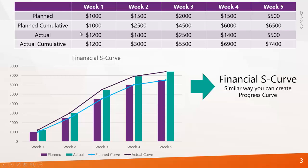Now we see what happened when the project is executed. Instead of spending $1,000 in the first week you spend $1,200, and in week two instead of spending $1,500 you spend $1,800. When it comes to the cumulative, you can see you have spent $7,400 on the fifth week instead of $6,500. That's a pretty big difference comparing to what you have planned.